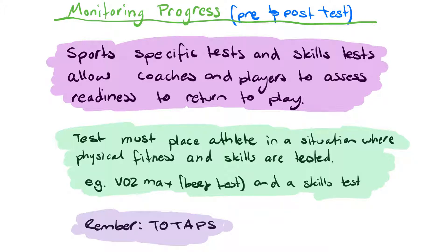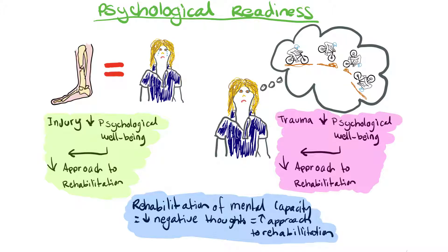This links back to the acronym TOETAPS from earlier in the syllabus in the injury assessment section — specifically the 'S' part, which is the skills test. If an athlete can't complete a skills test, we need to work backwards and identify which rehabilitation processes need to be improved or further implemented so they can eventually complete a skills test.